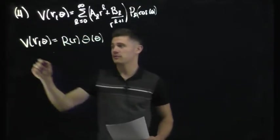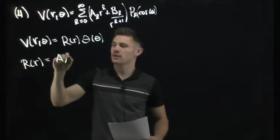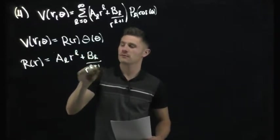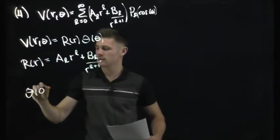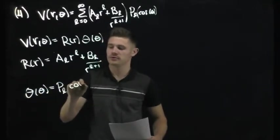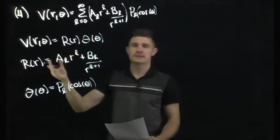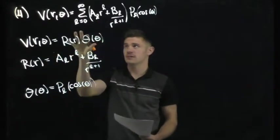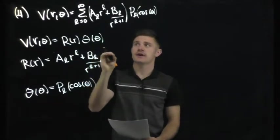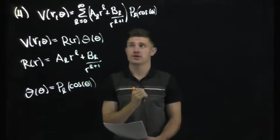The general solution for R(r) is A_L · r^L + B_L / r^(L+1), and Θ(θ) gives us the Legendre polynomials P_L(cosθ). What this sum means is that we take every single possible value of L and add all those up as our general solution.